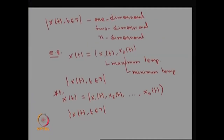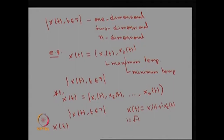We can also create a complex-valued stochastic process. X(t) = X1(t) + i·X2(t), where i is the complex quantity, the square root of minus one. X1(t) is a real-valued random variable for fixed t and X2(t) is also a real-valued random variable for fixed t. In this way, X(t) becomes a complex-valued random variable for fixed t, and over T it forms a complex-valued stochastic process.